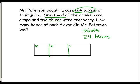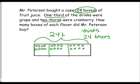Students count out the 24 boxes distributing them into the three groups. At 12 they note they're halfway there and can visually check the diagram, then continue counting to 24. Now that we've sorted the 24 boxes, we're going to label this with 24. That's what the picture represents.